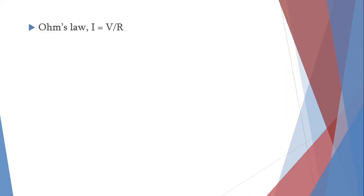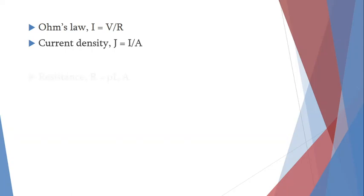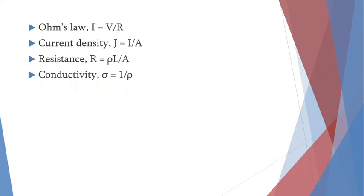Let us now derive this equation formally. We have Ohm's law: I = V/R. We also define current density J = I/A, that is, current per unit area. Resistance is R = ρL/A, so resistivity ρ = RA/L. Conductivity σ_E is the reciprocal of resistivity, so σ = 1/ρ. Substituting ρ = RA/L, we get σ = L/(AR).